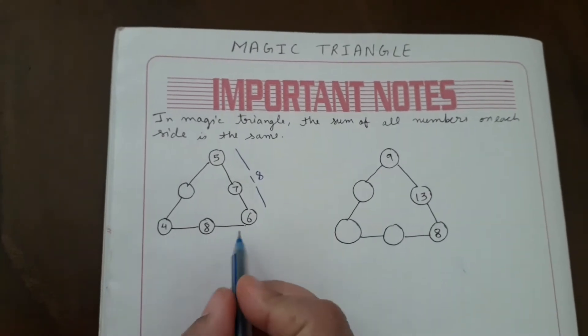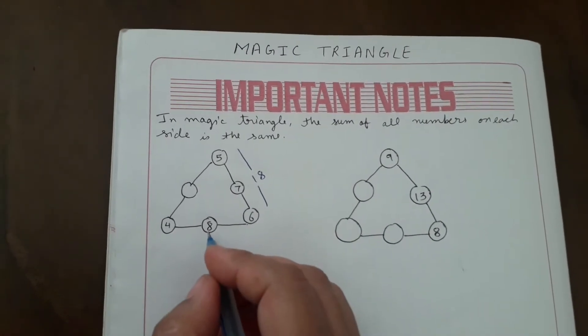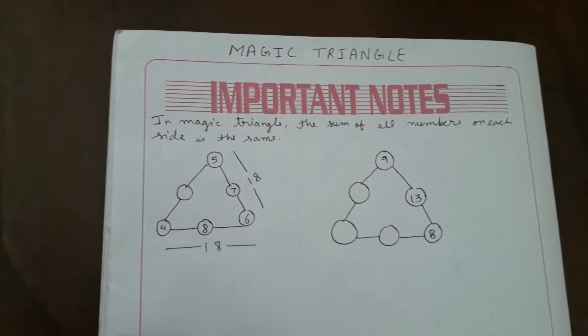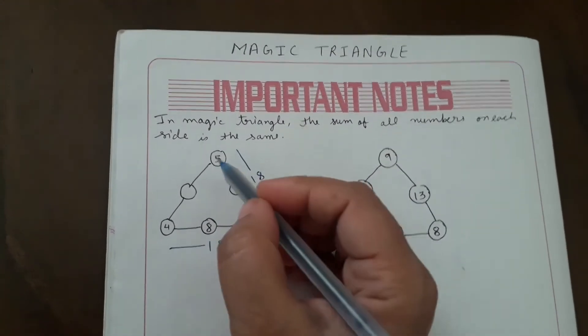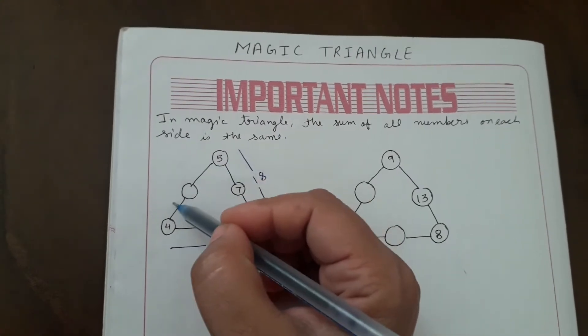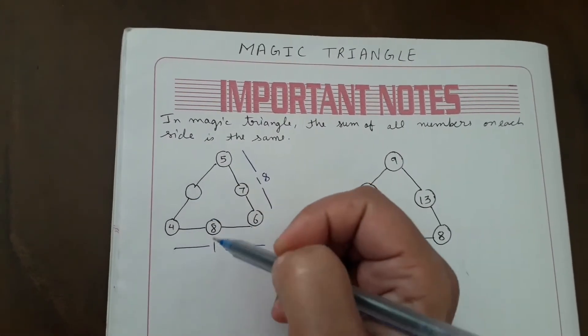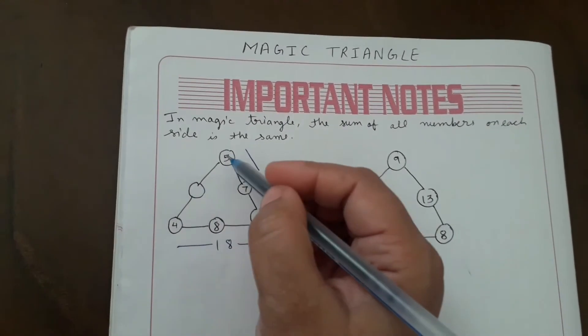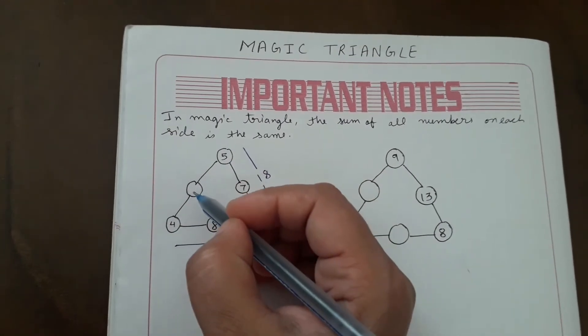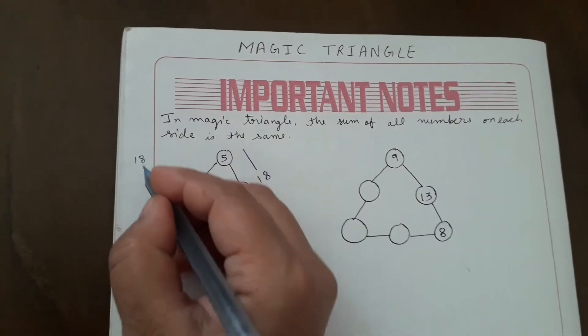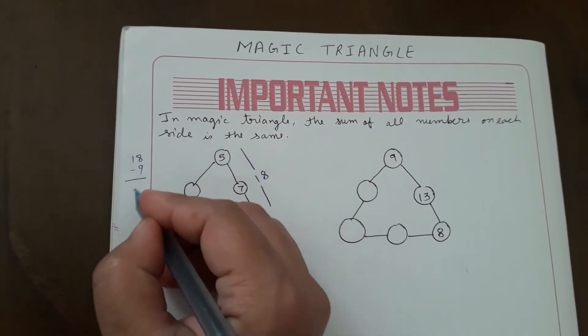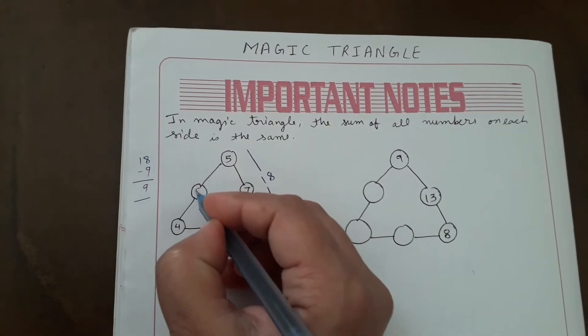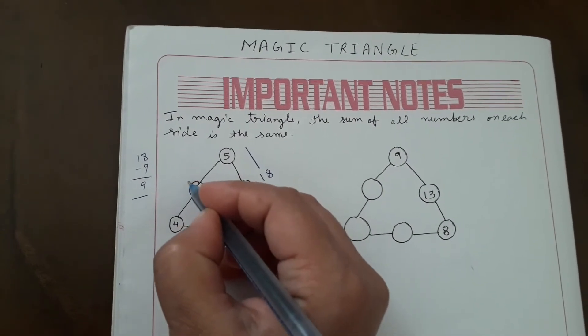Let's check here: 4 plus 8 is 12, 12 plus 6 is 18. We got 18 here also and here also. Then what will be the sum here so that it must be 18? For that, 5 plus 4 is 9. Then what we will put here so it becomes 18? 18 minus 9 will come to 9. So the question mark will be 9.